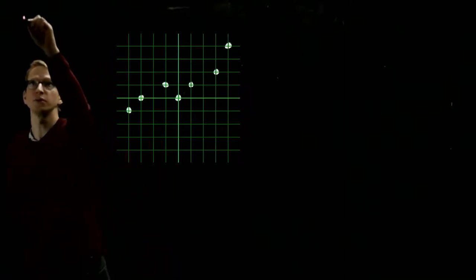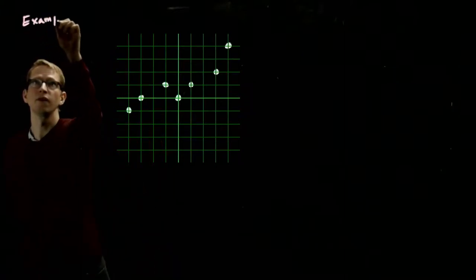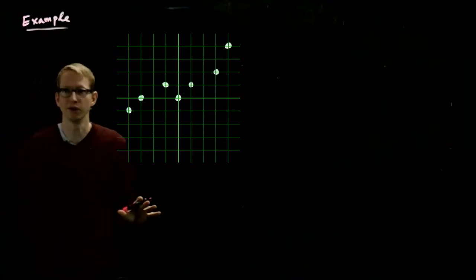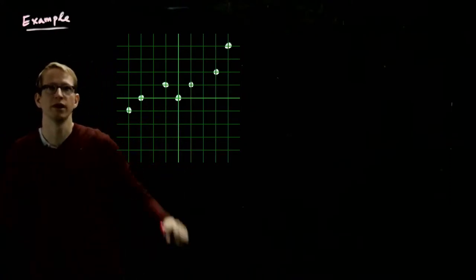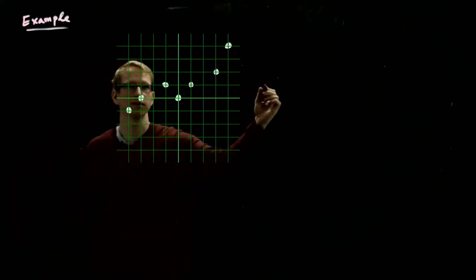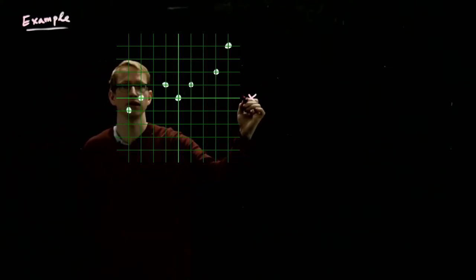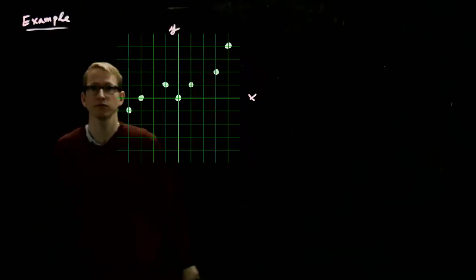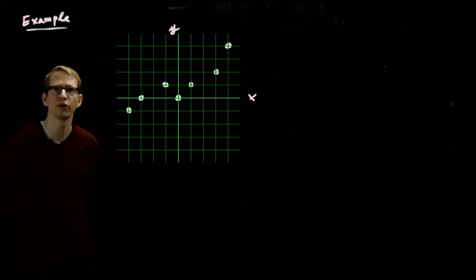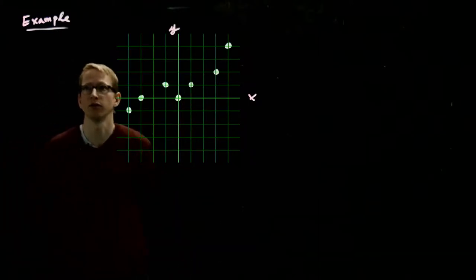So let's actually do an explicit example using actual numbers. Here's a graph and here are some data points. The x-axis is the horizontal axis and the y-axis is the vertical one. And let's just use a unit grid so that the distance between any two of these grid lines has length 1.